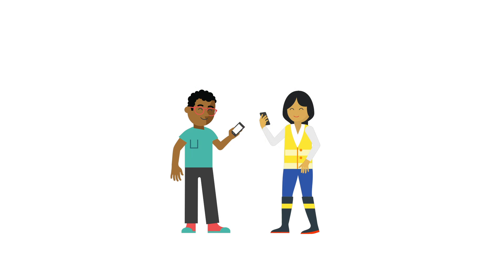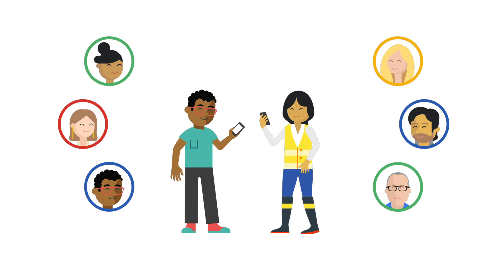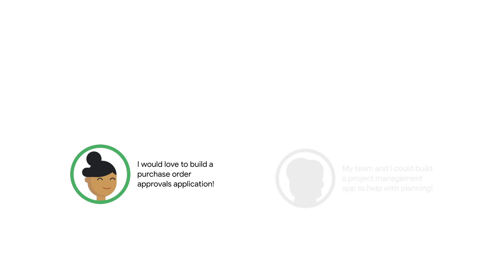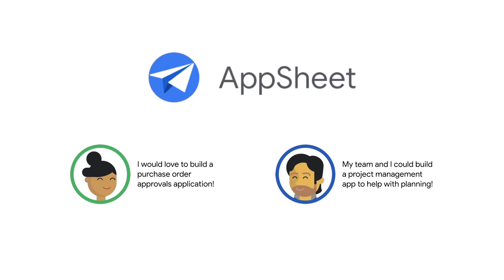This means that in addition to being an operations lead, she can now count herself among the growing group of citizen developers. Other departments soon take notice of how quickly Annie was able to solve the problem with no-code. Since IT has already provided governance guidelines, other teams are able to start leveraging AppSheet, becoming citizen developers themselves.